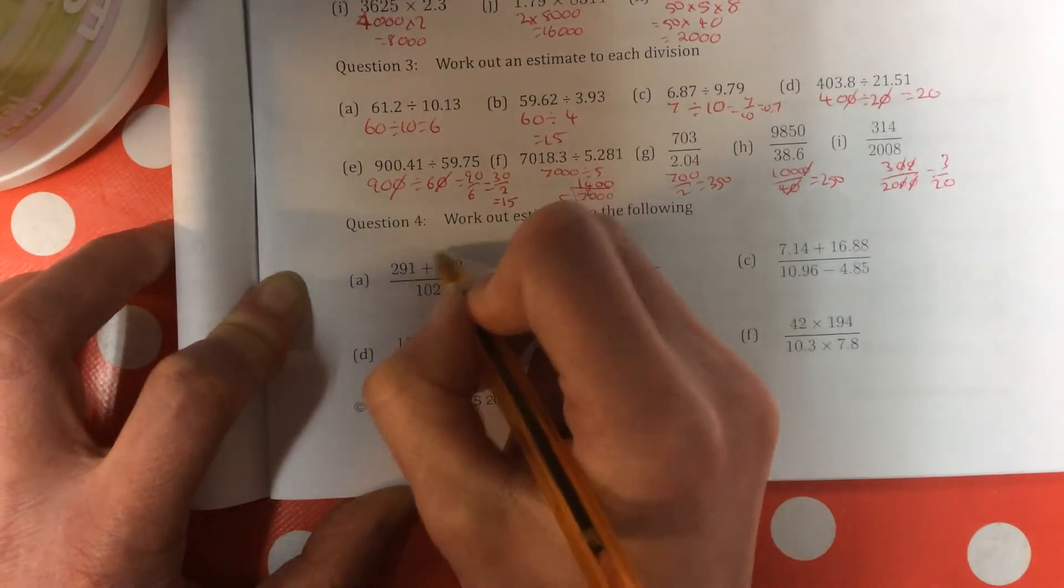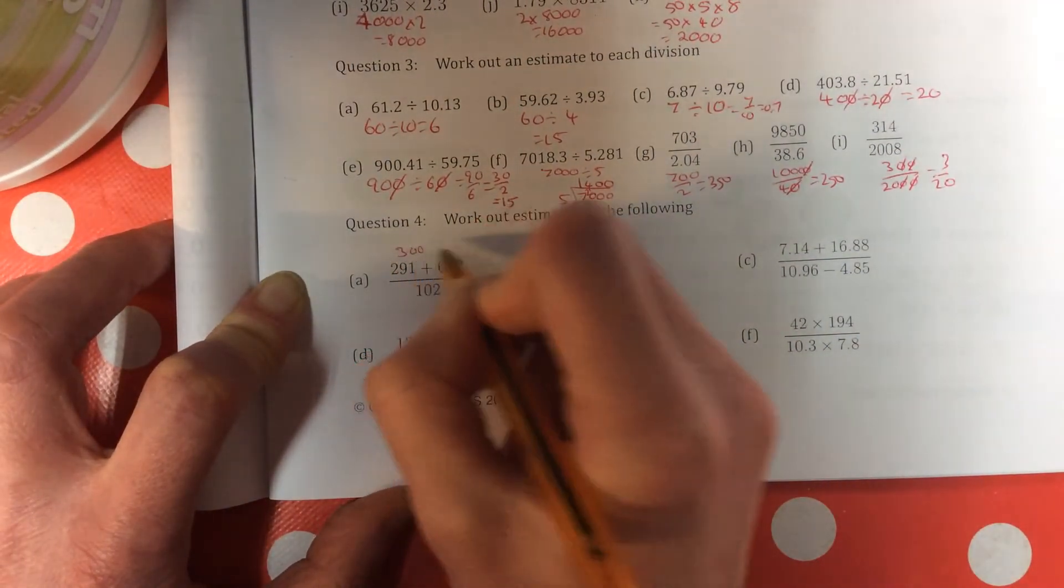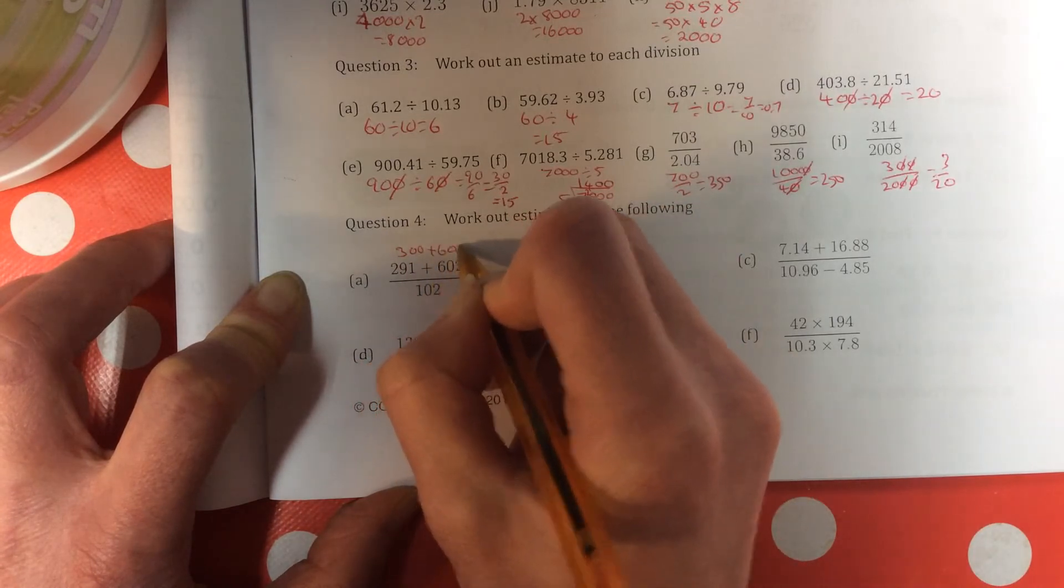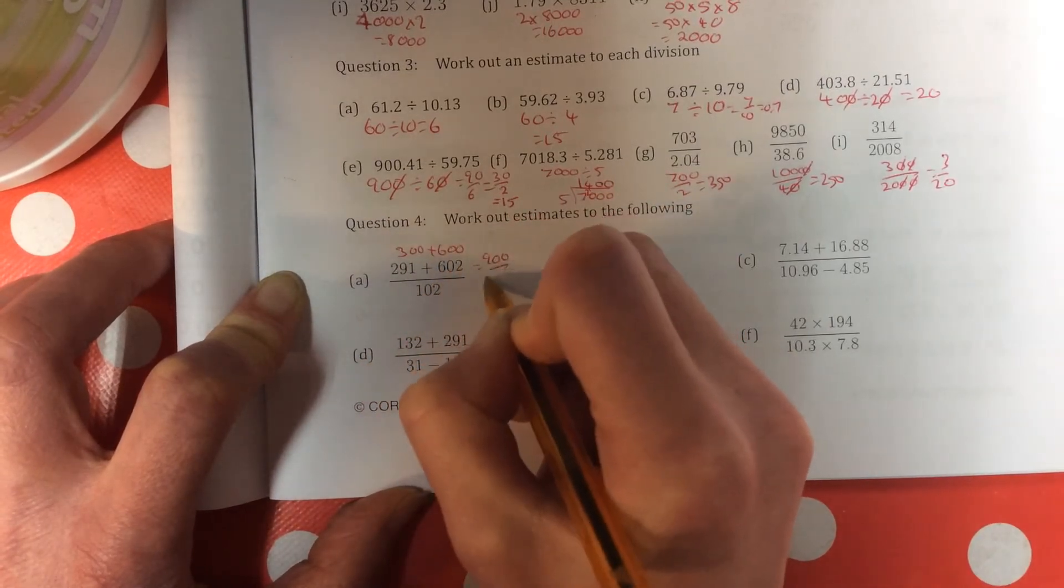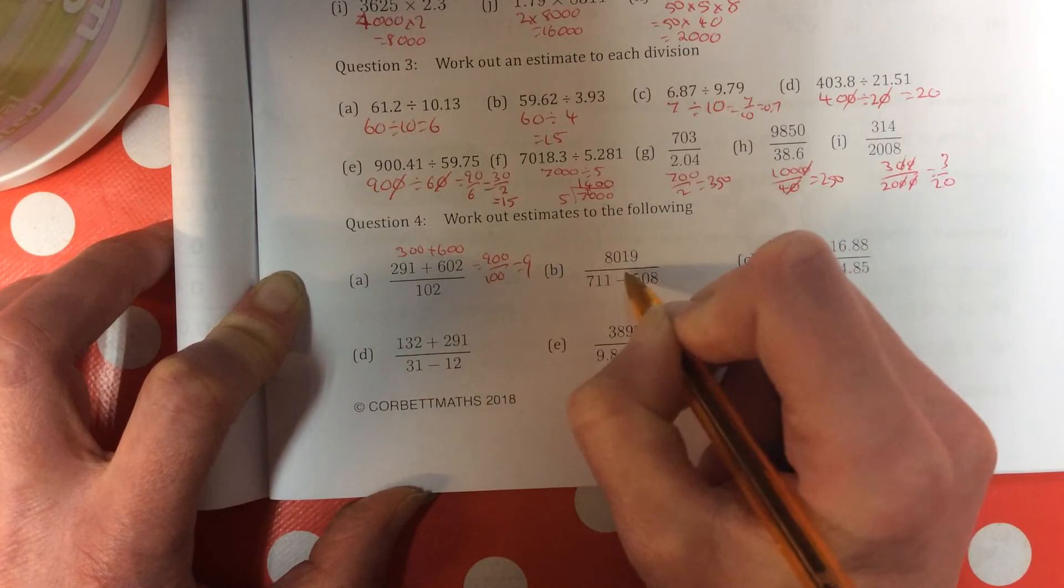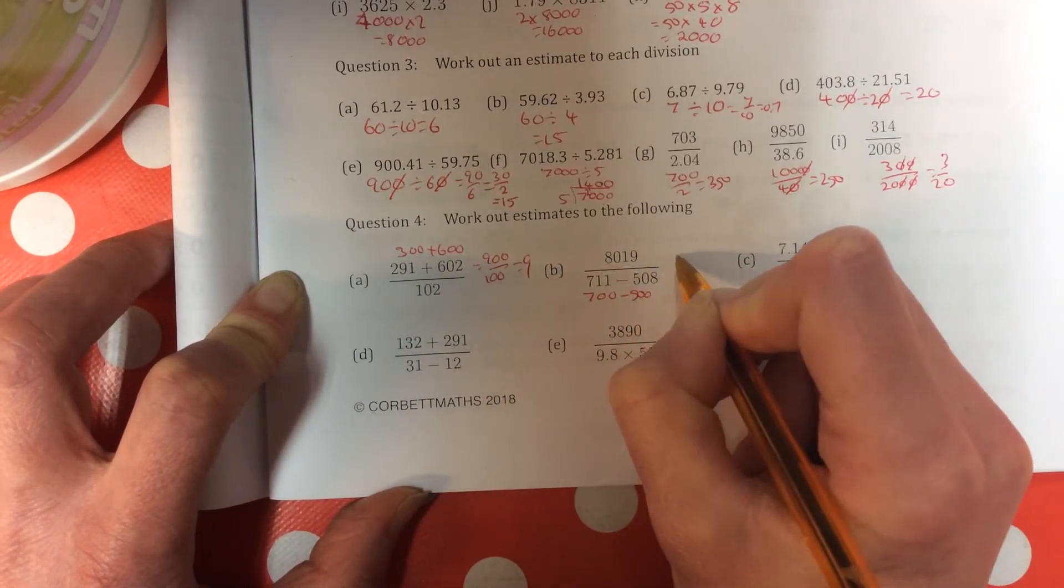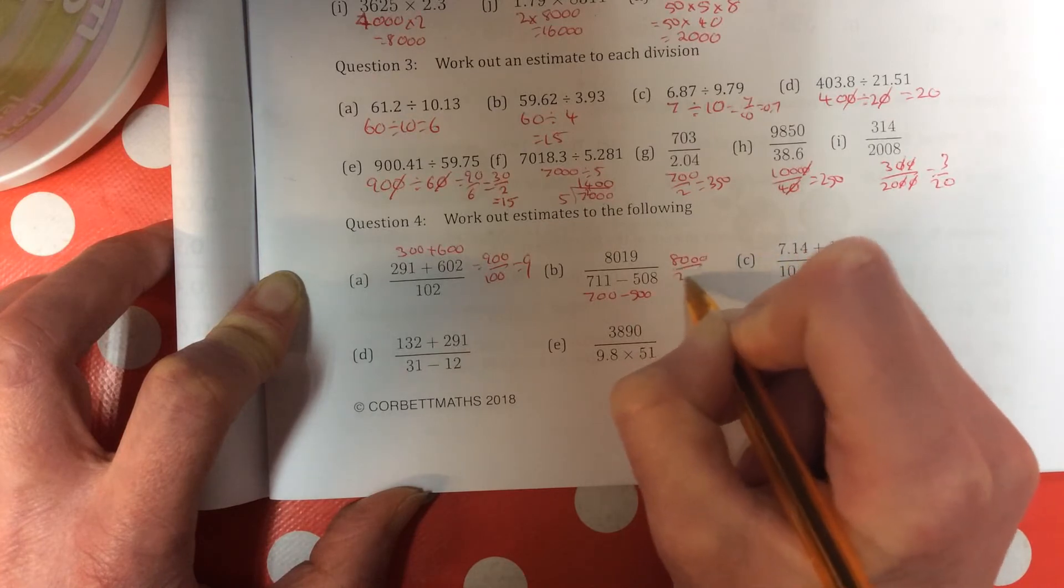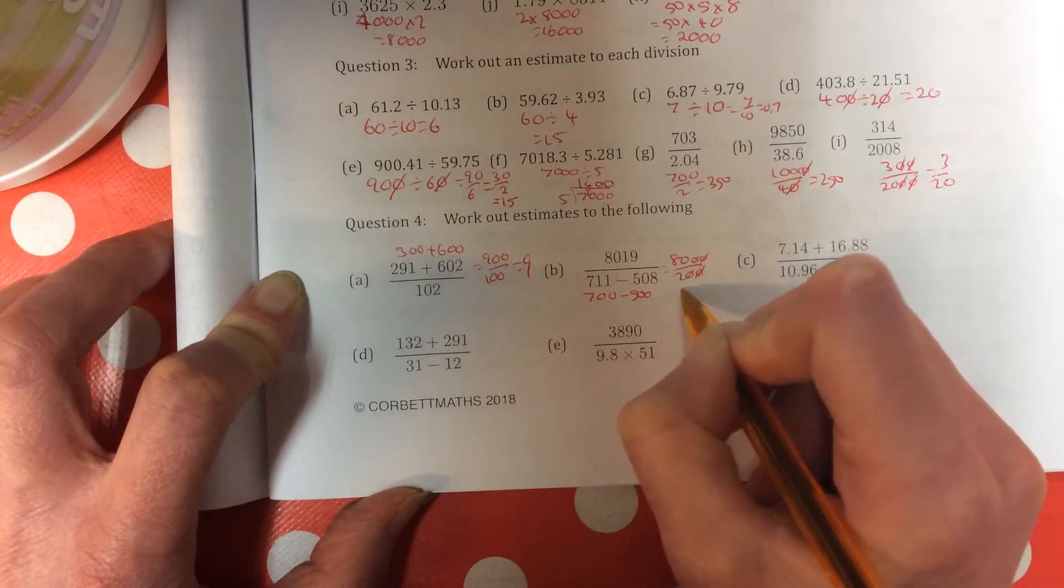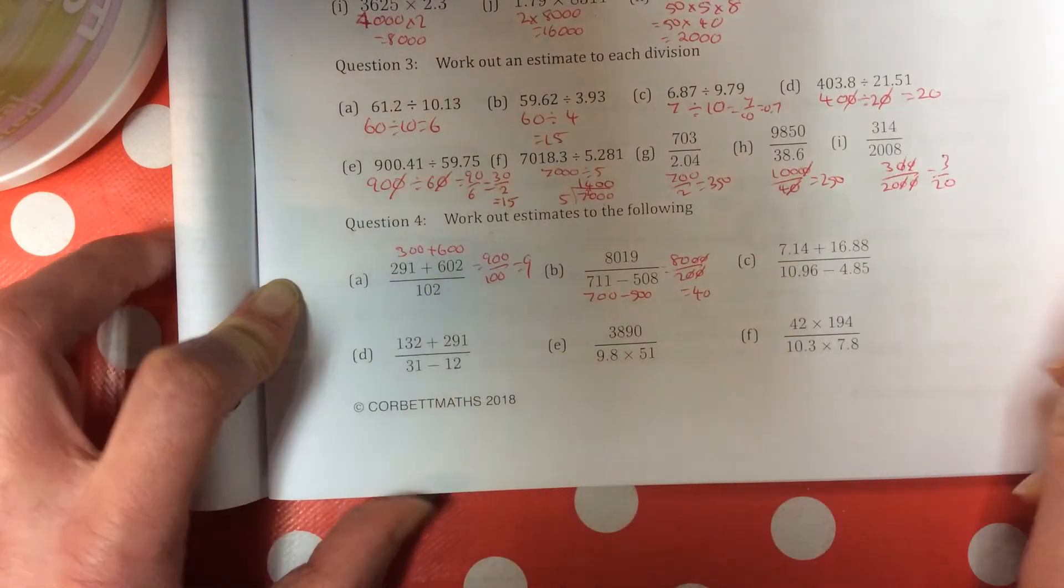And number 4. Top line becomes 300 add 600. So it's 900 over 100, which is 9. The bottom line becomes 700 minus 500, which is 200. Top line is 8,000 divided by 200. Take off two noughts. 80 divided by 2 is 40.